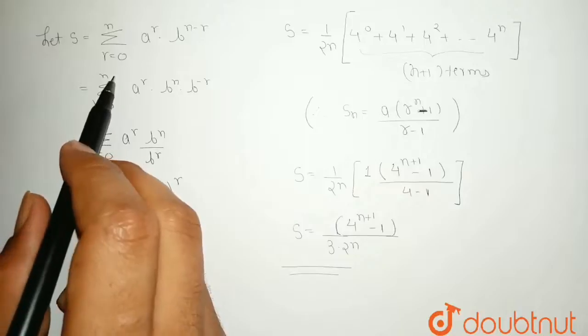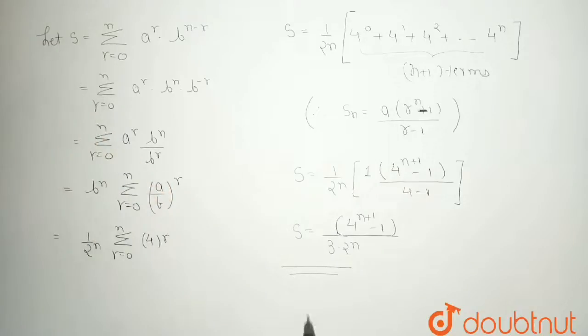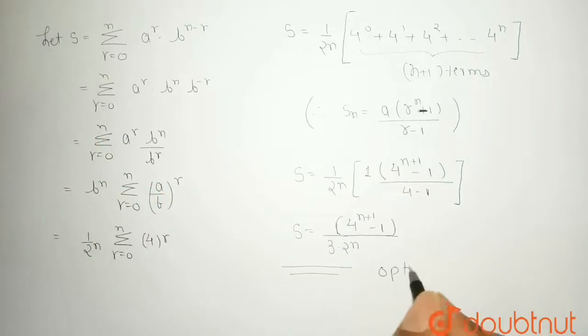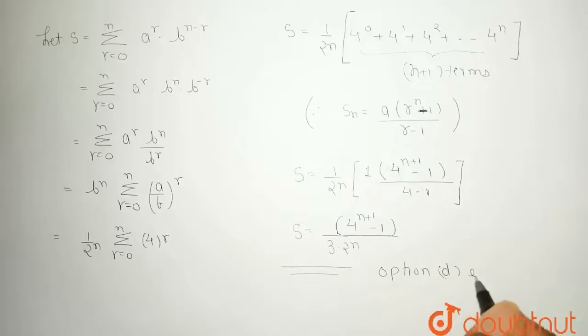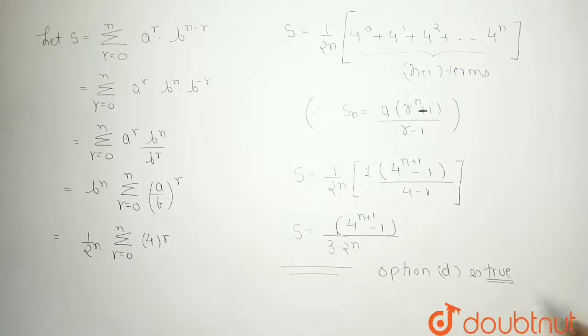So the value of S is (4^(n+1) − 1) / (3 · 2^n). This matches option D. Hope you found this question clear — thank you for using Doubtnut.